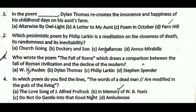The first question is: in the poem blank, Dylan Thomas recreates the innocence and happiness of his childhood days on his aunt's farm. The correct answer is D, that is Fern Hill.